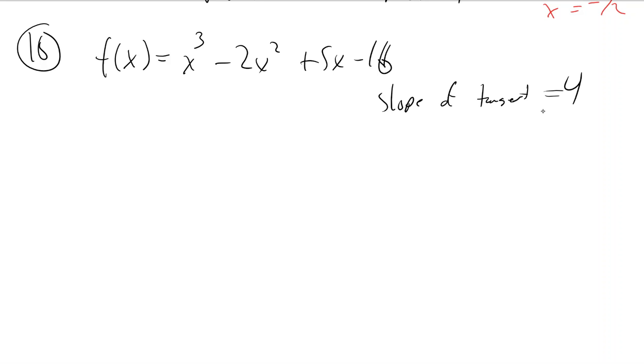Slope of the tangent line is like the derivative there, so we need to take this guy's derivative. Do you understand why I would set this equal to 4?